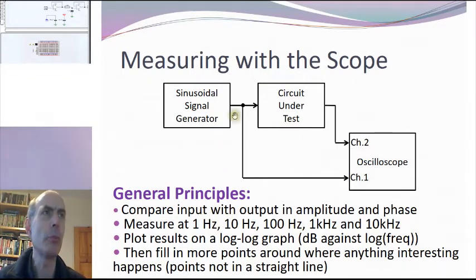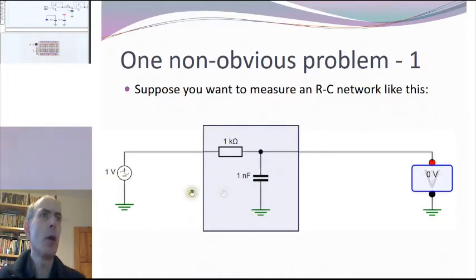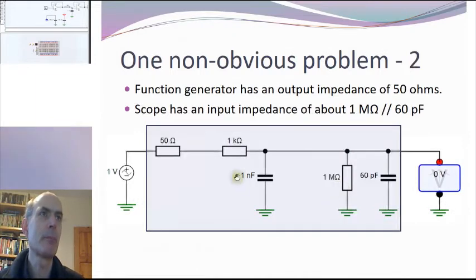Now there's just one problem with doing this, well there's two problems really. One problem is that it takes quite a long time since we've got six different circuits to investigate, and the other problem is that we don't have an ideal voltage source. The function generator has a 50 ohm output impedance. And we don't have an infinite impedance ideal voltmeter either. The oscilloscope does not have an infinite input impedance. Our oscilloscope is something like 1 meg in parallel with 60 picofarads input impedance.